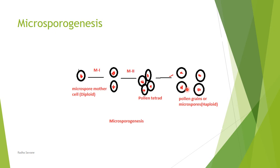Pollen grains are the important structures formed inside the anther, inside the pollen sac. The function of a pollen grain or microspore is to develop into the male gametophyte. Before starting the development of male gametophyte, we should know the structure of pollen grain — which we are going to study in the next lecture.